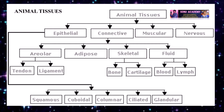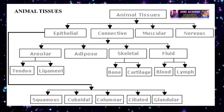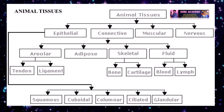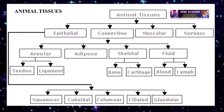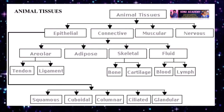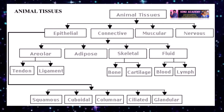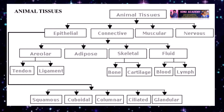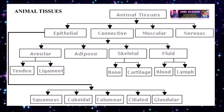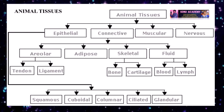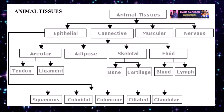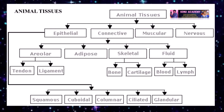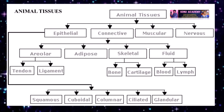Now let us discuss about the definition of tissue. Tissue means a group of cells working together to bring out a function. The advantage of tissue in a multicellular organism is division of labor. Animal tissue is mainly categorized into epithelial tissue, connective tissue, muscular tissue and nerve tissue.